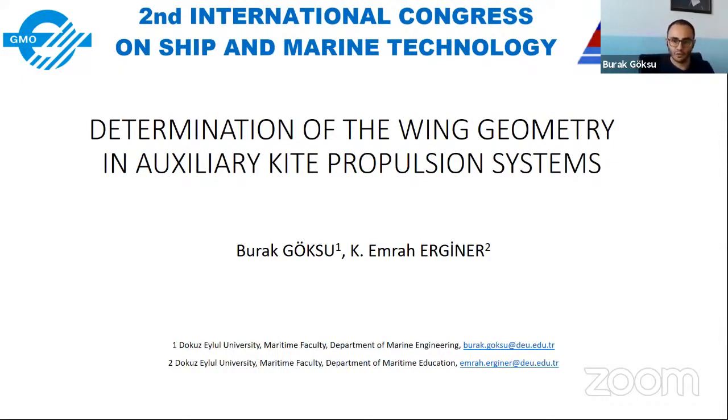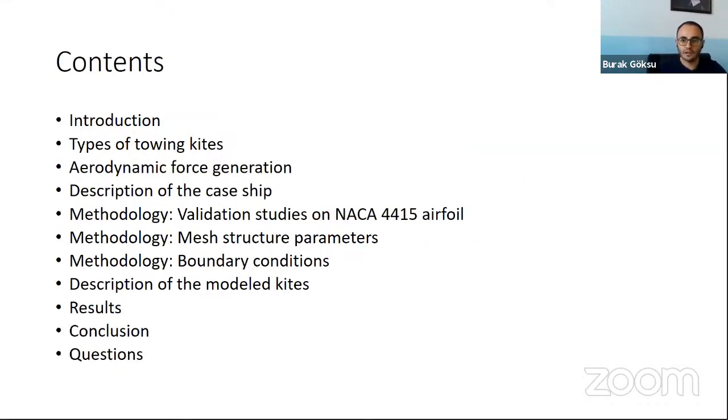First of all, I will appreciate to the Congress committee my attendance of this Congress. The topic is about the auxiliary kite propulsion system. One issue is the determination of the wing operation geometry for safe, stable kite operations. The other one is the efficient kite form to optimize the towing force. The titles that will be explained in this presentation are listed as items. After a short introduction, towing kite types will be introduced and the theory data about aerodynamic force coefficients will be given. After that, the validation study will be introduced and mesh structure and boundary conditions will be described. Last section, the results and their conclusions will be summarized.